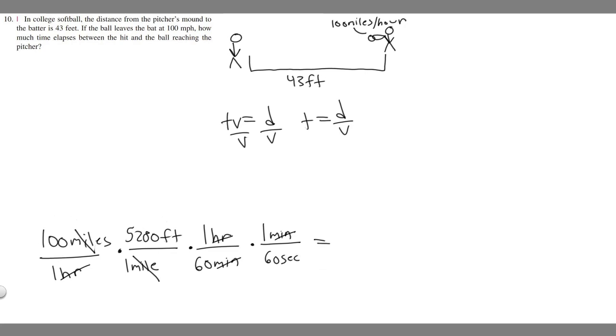It's just going to be 100 times 5,280 divided by 60 divided by 60. If you do that, you're going to get 146.67, and keep in mind our units, feet over seconds. So this is going to be our new velocity. Now that we have them aligned in terms of units, we can just plug it in.